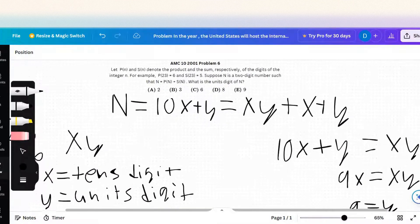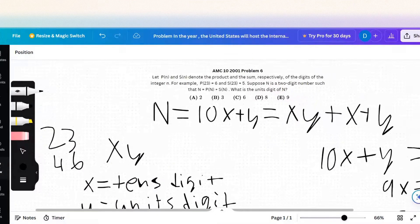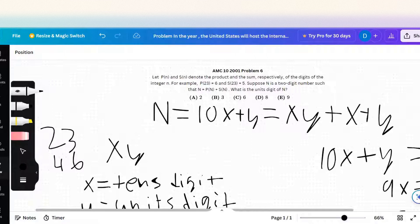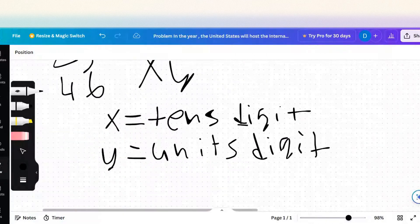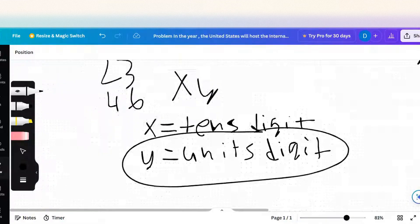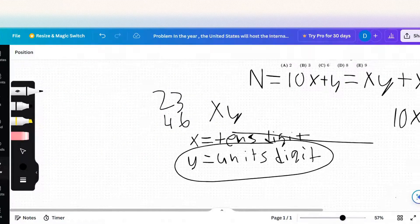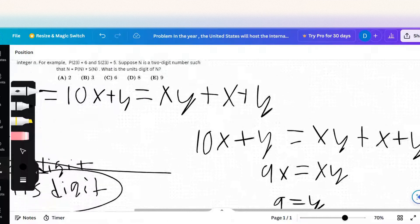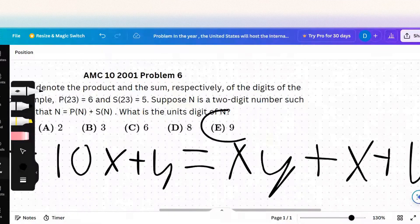So if y equals 9, what are we looking for? What is the units digit of integer n? The units digit is y, and we already have y solved. It's 9. So the solution is 9, or E.